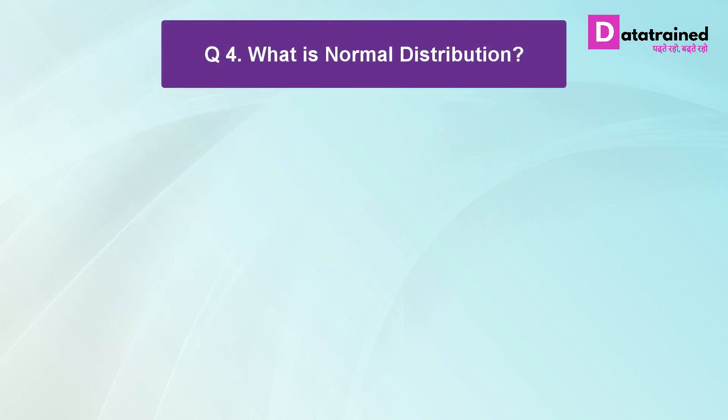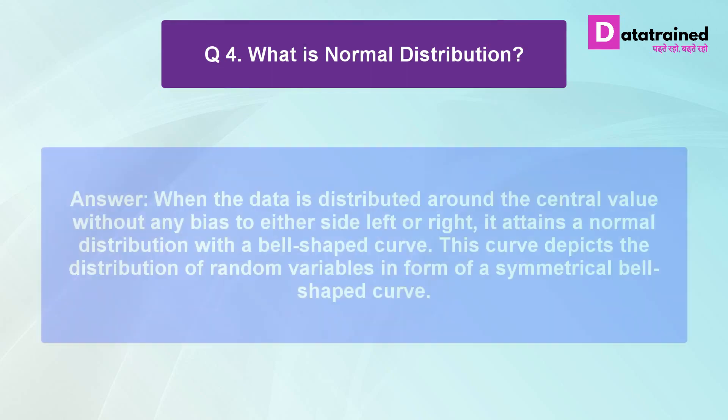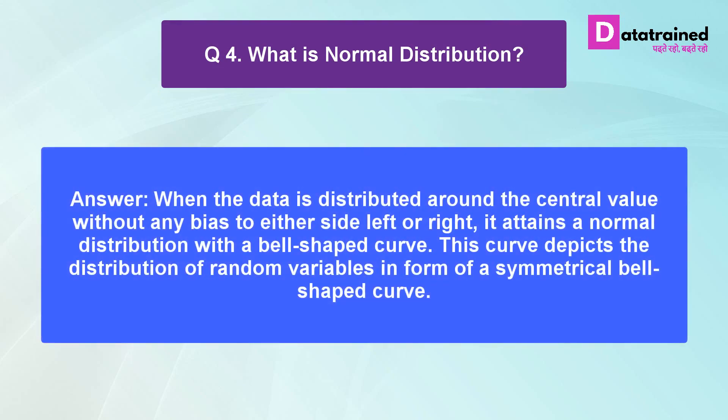What is normal distribution? When the data is distributed around the central value without any bias to either side left or right, it attains a normal distribution with a bell-shaped curve. This curve depicts the distribution of random variables in form of a symmetrical bell-shaped curve.